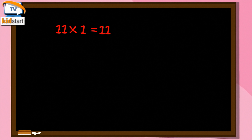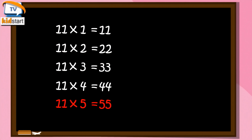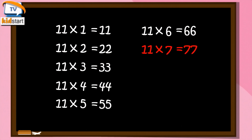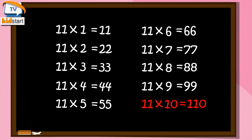Eleven ones are eleven. Eleven twos are twenty-two. Eleven threes are thirty-three. Eleven fours are forty-four. Eleven fives are fifty-five. Eleven sixes are sixty-six. Eleven sevens are seventy-seven. Eleven eights are eighty-eight. Eleven nines are ninety-nine. Eleven tens are one-ten.